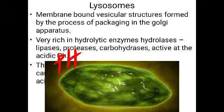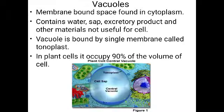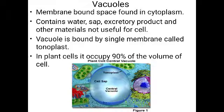Vacuoles were named by Dujardin. A vacuole is a membrane-bound space found in the cytoplasm — an empty space surrounded by a membrane, containing water, sap, excretory products, and other waste materials not useful for the cell. The vacuole is surrounded by a single membrane called the tonoplast, as seen in the picture.